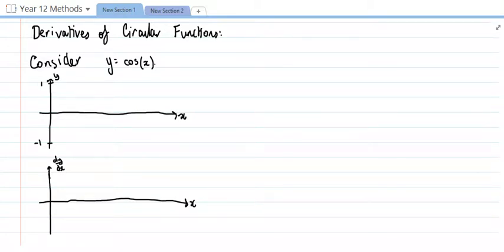To actually start us off, what I'm going to do is I'm going to prove why some of these circular functions have the rules that they do. So to start off with, I'm going to sketch y equals cos(x).